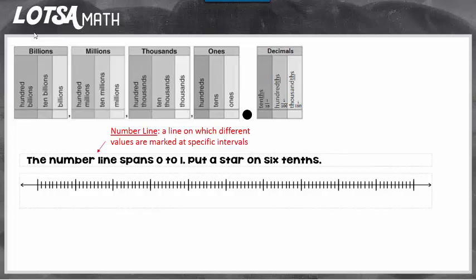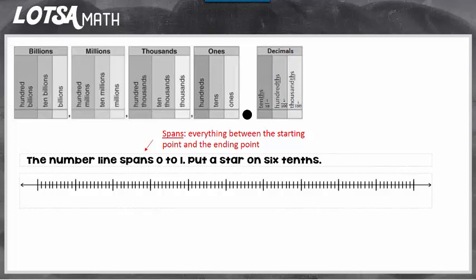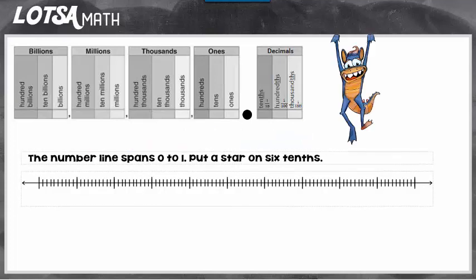So each of those ticks shows a different spot where a number value would go. And this one spans, and spans means everything from the start in between to the end. So we're going to put a star on 6 tenths. So this number line spans 0 to 1.